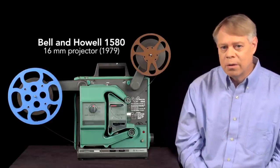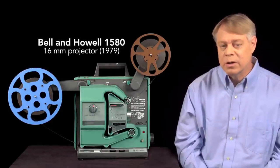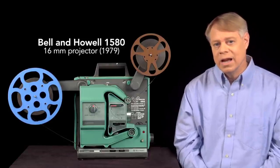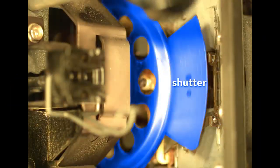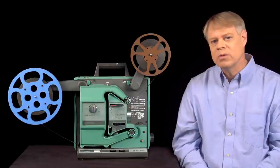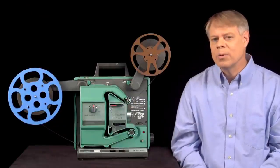I'll examine this Bell & Howell 1580 16mm projector built in 1979. We'll look at the shuttle that starts and stops the film, the shutter that strategically blocks light, and the photo sensor that reads the sound, all of which operate in harmony.